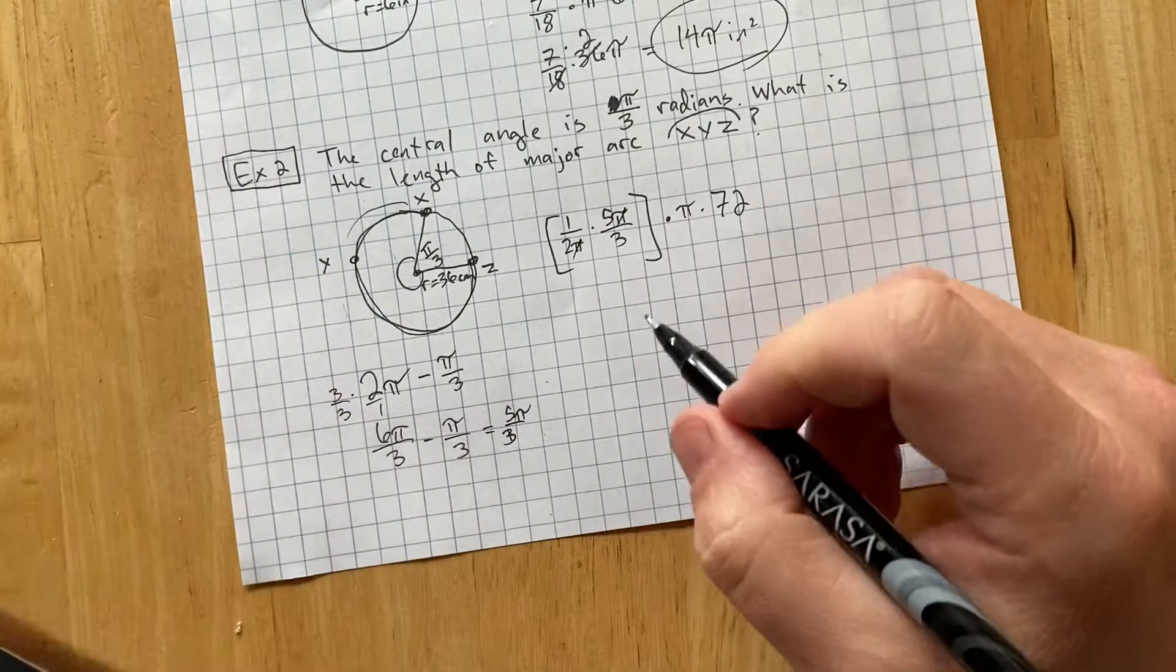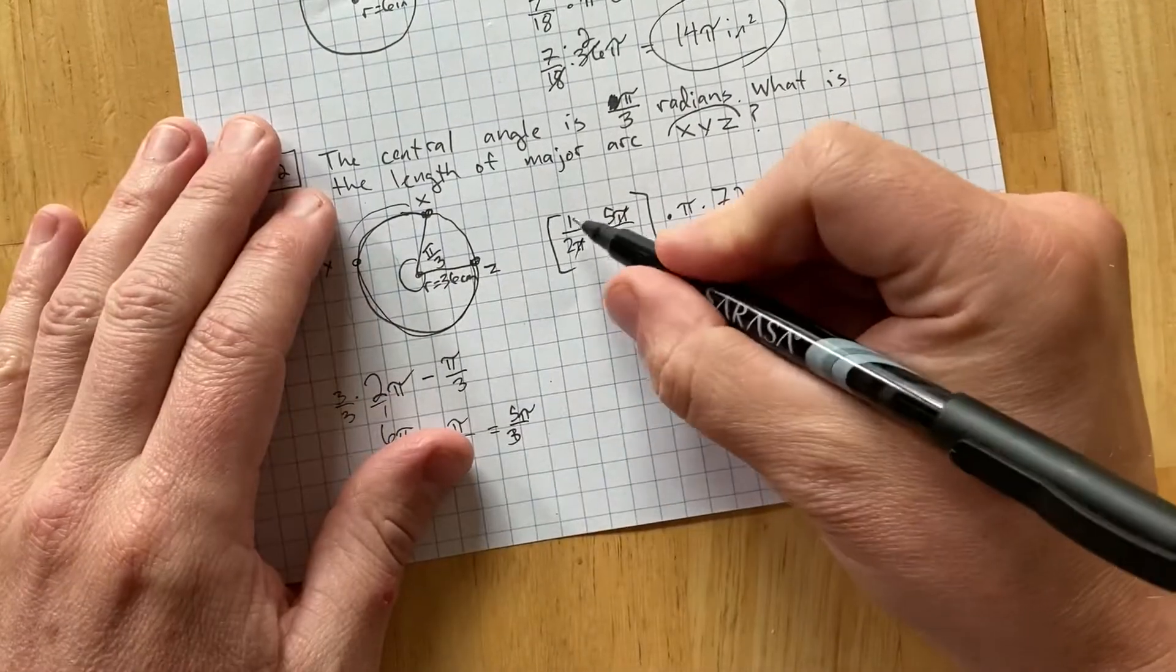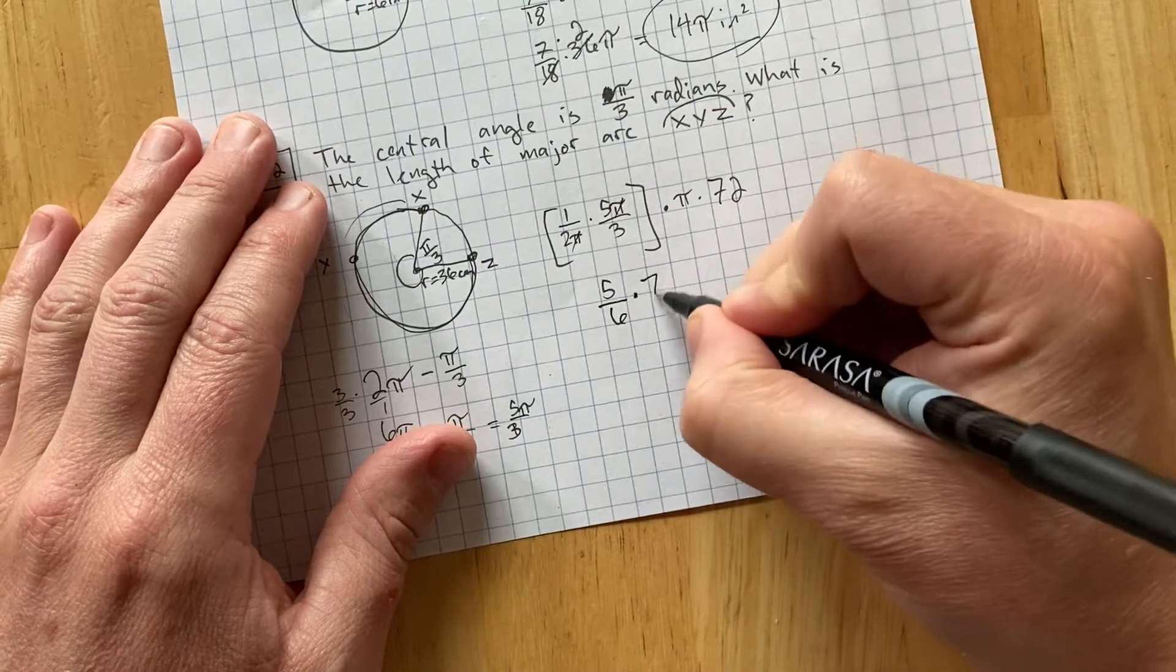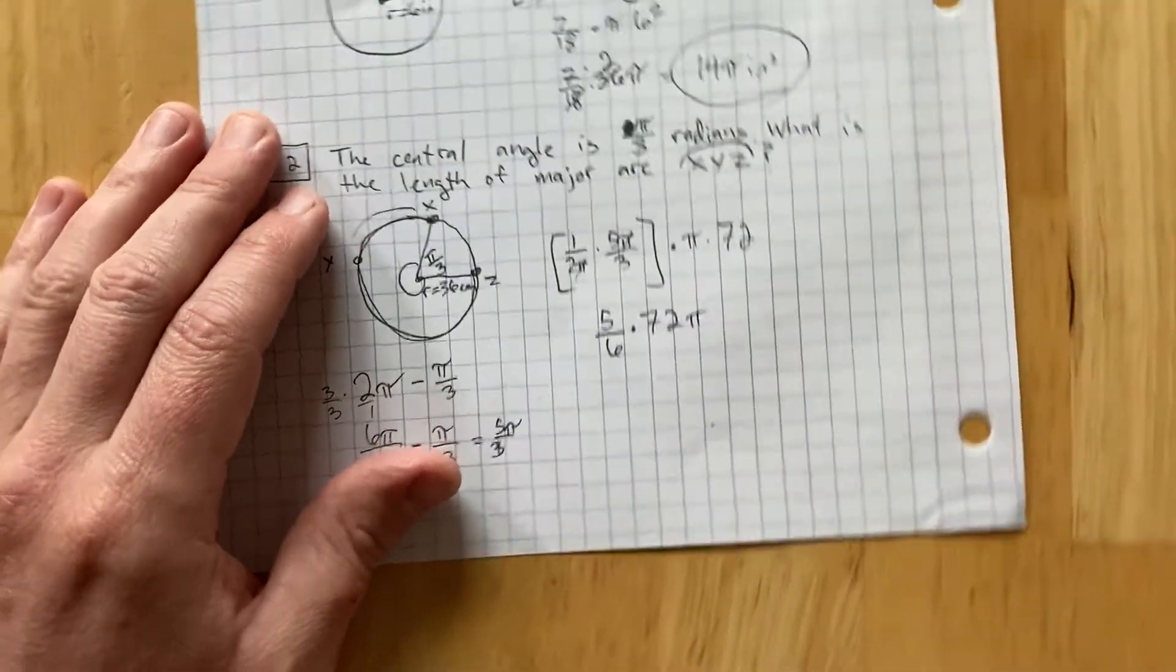Again, the pi's cancel. And I end up with, 1 times 5 is 5. 2 times 3 is 6. And then, 5 sixths times 72 pi. That's not so bad.